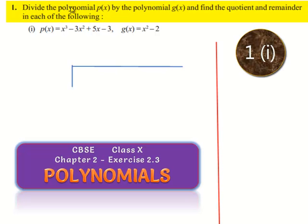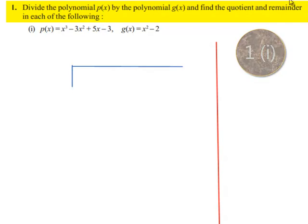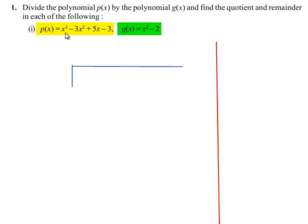Coming to the first problem: divide the polynomial p by the polynomial g and find the quotient and remainder in each of the following. The first one given to us is p is equal to x cube minus 3x square plus 5x minus 3, and g is equal to x square minus 2. We are asked to divide the polynomial p by the polynomial g.